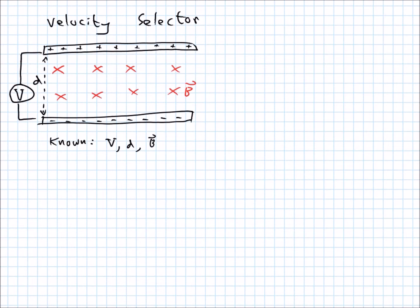And my question is, what velocities will this thing select? Alright, so just to review, or if you've seen this before or not, what a velocity selector does is, I'm going to draw another picture because I don't want that one to get messy.